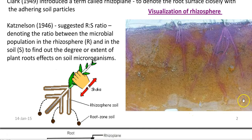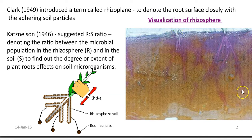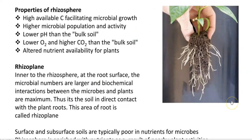Through experiments, the low pH of the rhizosphere has been proved through visualization by adding certain dyes which give color in highly acidic conditions, showing a lower pH than that of the bulk soil. The oxygen level is always lower in the rhizosphere whereas carbon dioxide is higher compared to bulk soil. This is due to microbial respiration — they consume a lot of oxygen and release a lot of carbon dioxide.